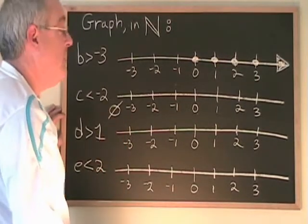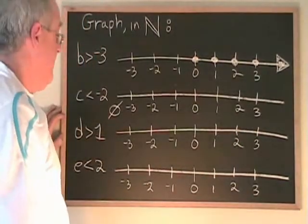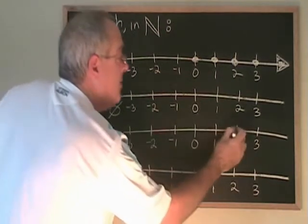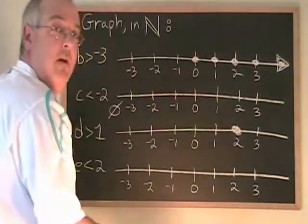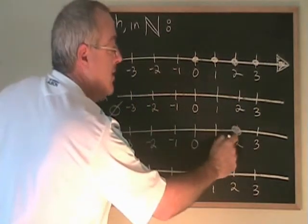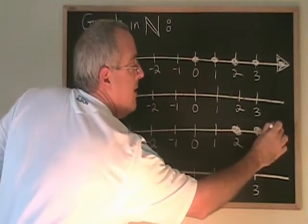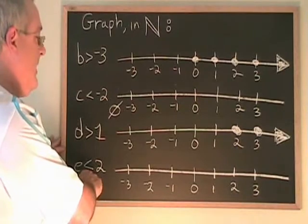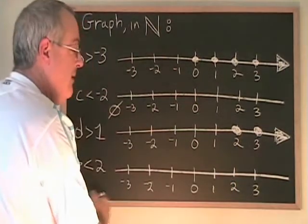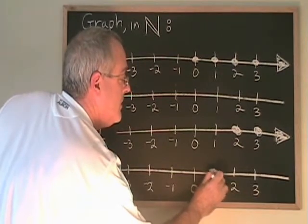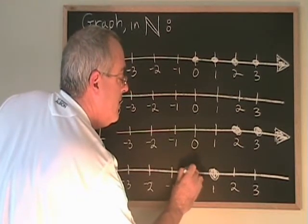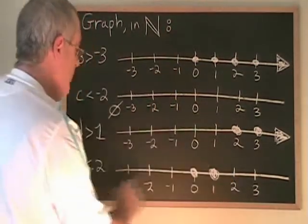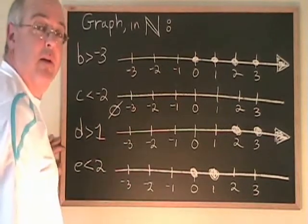d greater than 1: the natural numbers that are greater than 1 start with 2. 1 is not greater than itself, so it is not part of the answer. 2 is greater than 1, 3 is greater than 1, and on and on forever in the positive direction. e less than 2: the numbers less than 2 are over here. 1 is less than 2, so it's part of the answer. 0 is less than 2, it's part of the answer. The negative numbers are not natural, so they're not part of the answer. And 2 itself is not less than 2, so it is also not part of the answer.